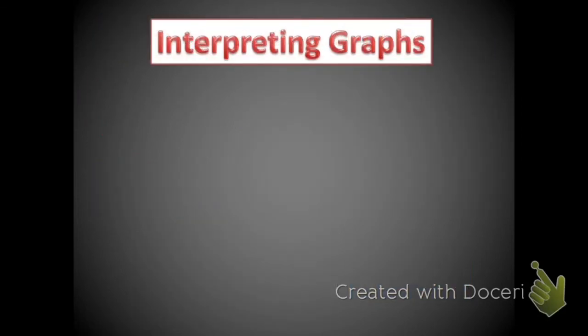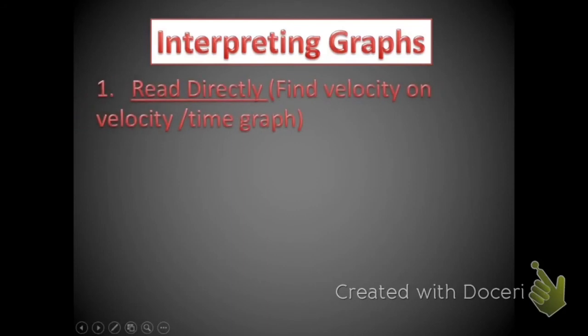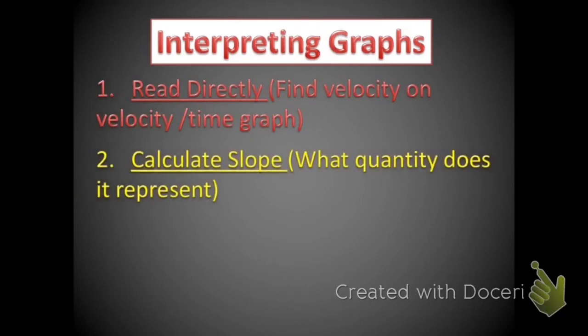We also talked in this chapter about interpreting graphs. We can do three different things looking at a graph. We can read it directly, like finding what the speed is on a speed graph. We can also learn a little bit more by looking at the slope. The slope of a position time graph tells us speed, and the slope of a speed versus time graph tells us acceleration.